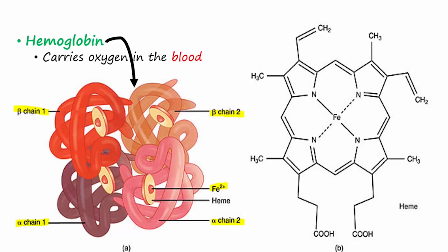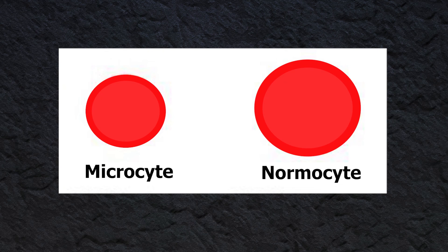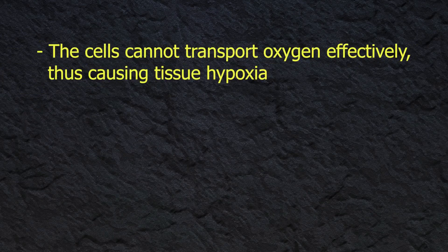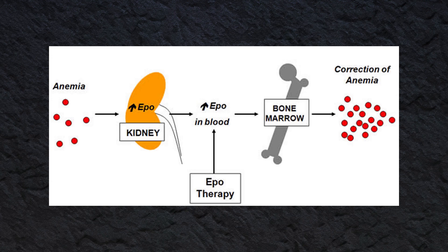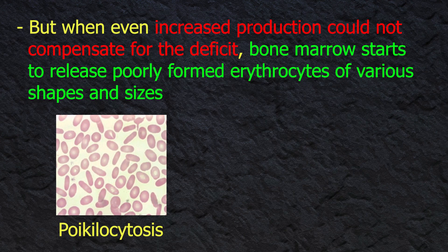All of these causes lead to inadequate iron for the body's needs. Iron is essential for cell division in the red cell generation process as it is a major component of hemoglobin. When there is not enough iron for hemoglobin production, the bone marrow releases small-sized cells known as microcytic red cells. They also contain less hemoglobin and therefore appear pale in color. These cells cannot transport oxygen effectively, causing tissue hypoxia. This stimulates the bone marrow to increase erythropoiesis, but when increased production cannot compensate for the deficit, the bone marrow starts to release poorly formed erythrocytes of various shapes and sizes — this is called poikilocytosis and anisocytosis.